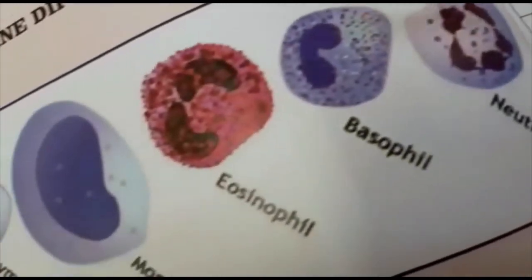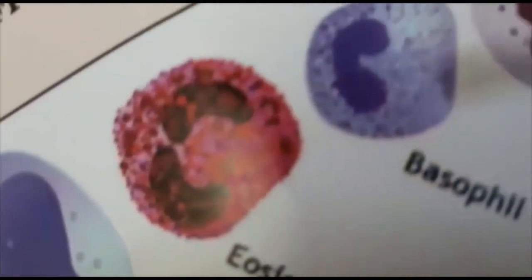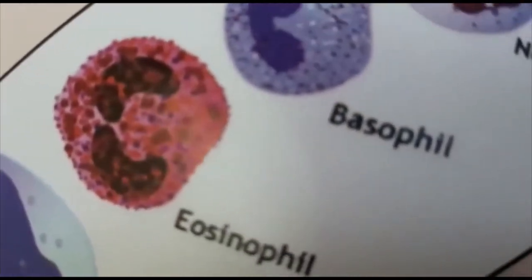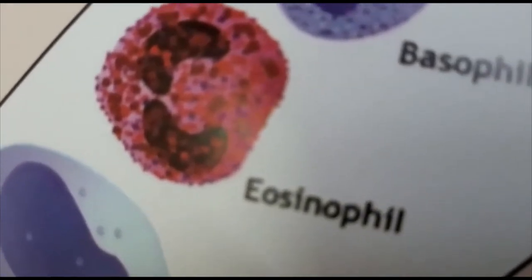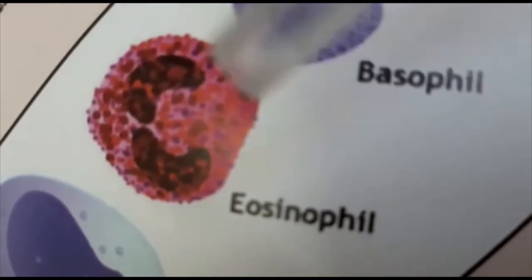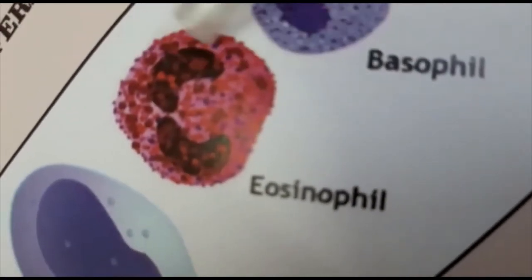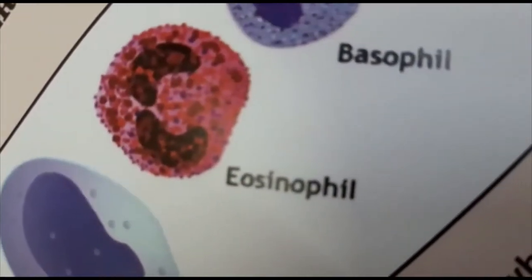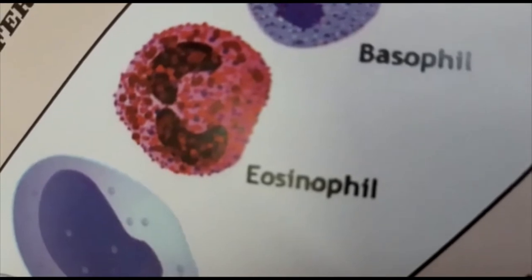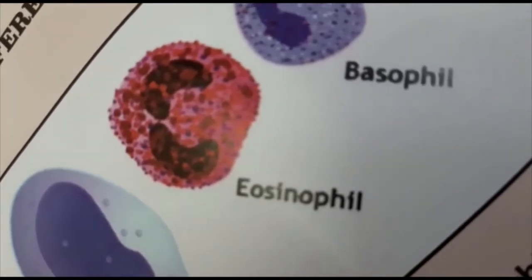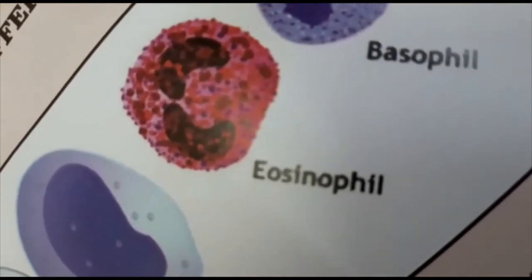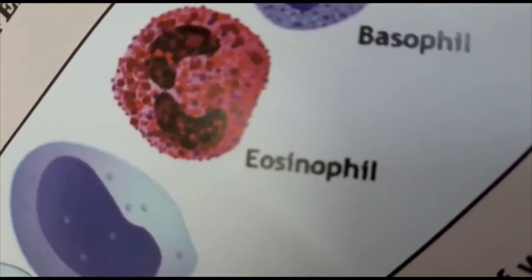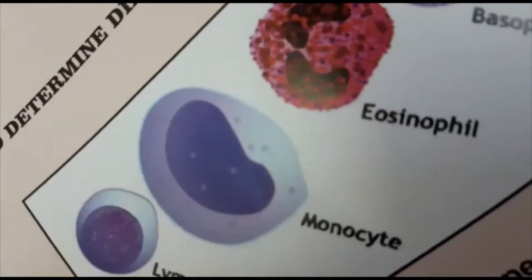Eosinophils are normally 4% and are bi-lobed, resembling spectacles. They are red or pink in color. In the cytoplasm, granules are almost non-visible at this view.